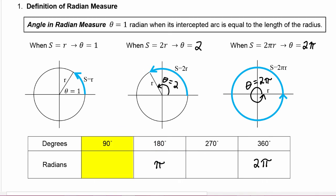Half of 180 is 90, so half of π would be π/2.